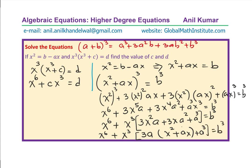Now you can see that x squared plus ax equals b, which we can substitute directly. So x squared plus ax is replaced by b, and therefore we get: x to the power of 6 plus x cubed times (3ab + a cubed) equals b cubed.